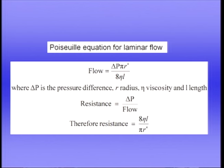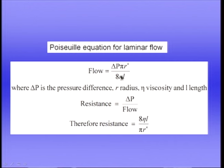The principles of laminar flow were worked out by a French physician called Poiseuille, who was very interested in blood flow through blood vessels. He developed the Poiseuille equation for laminar flow. Flow equals the pressure difference delta P, times pi, times the radius to the fourth power, divided by 8, the viscosity eta, and the length L. So flow is proportional to the pressure difference, inversely proportional to viscosity and length, and depends on the fourth power of the radius.